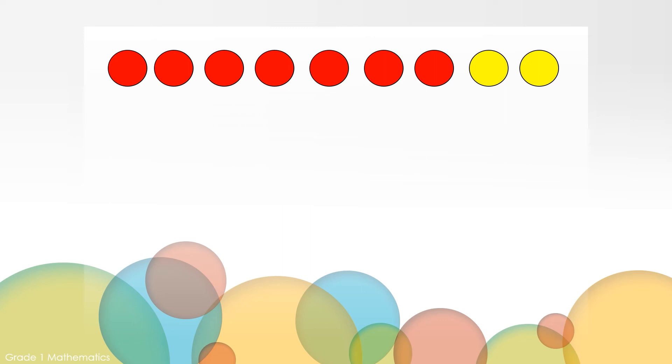We could look at these counters and describe them with number sentences in a variety of ways. We could say nine counters is the same as seven red counters and two yellow counters. We could also say nine counters is the same as two yellow counters and seven red. Or we could say two yellow counters is the same as nine total counters minus seven red counters. Lastly, we could say seven is the same as nine total counters minus the two yellow counters. These are all considered related facts.